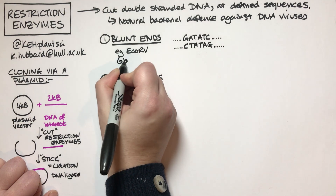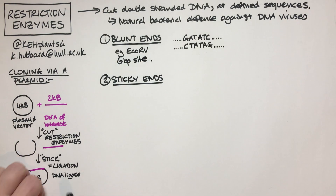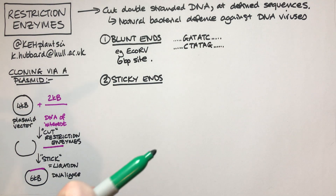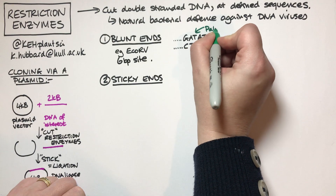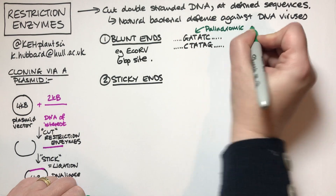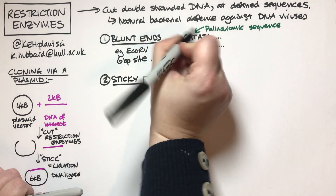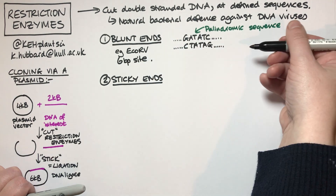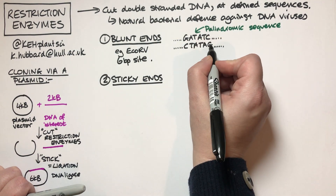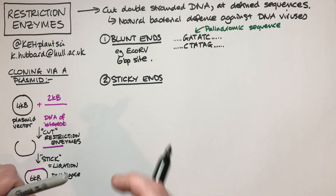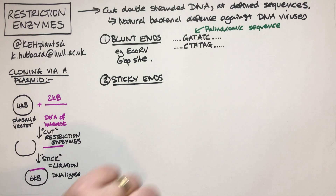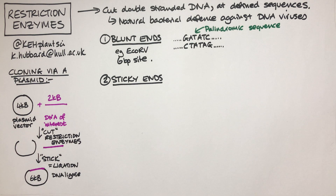That's a six base pair site, and if you notice, the site is what we call a palindrome — it's the same front to back. If I read in one direction going forward: GATATC, and if I read in the other direction — remember the DNA strands are antiparallel — it's exactly the same: GATATC. So it's a palindromic sequence, it's directly reversible.